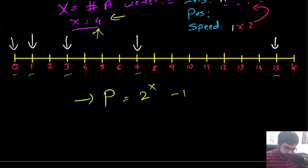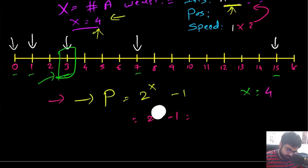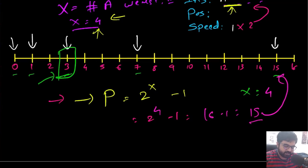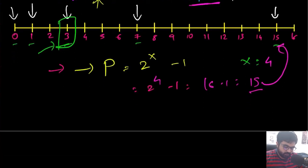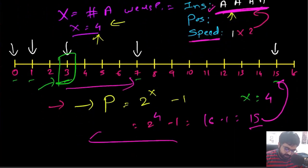We can see a clear relationship between position and the number of accelerations. The car only moves via accelerate; the direction depends on reverse. So acceleration determines movement, giving us the formula 2^X − 1 as a key tool.